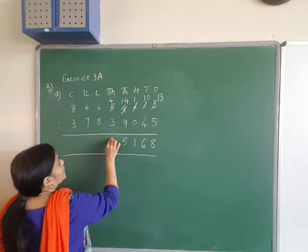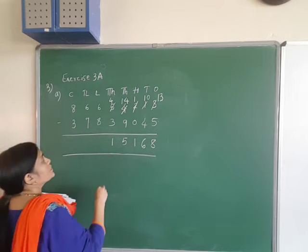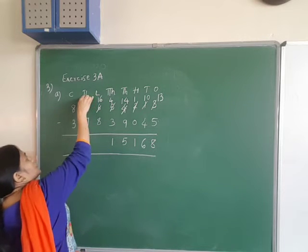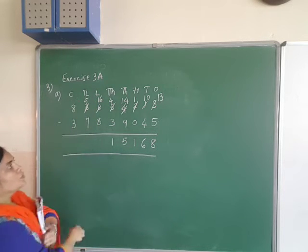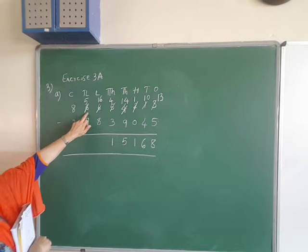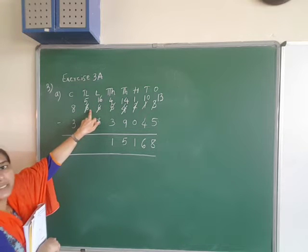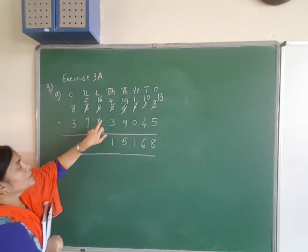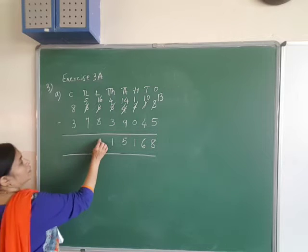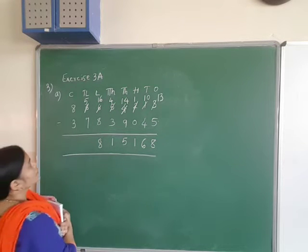Next, 4 minus 8 — carry over makes this 1. 6 minus 8, we cannot subtract, so again this will be 16, and this will become 5. Don't forget the carry over of 1 from this — making it 1 less here. 16 minus 8 is 8.